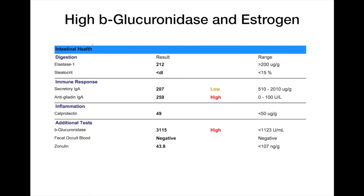High beta-glucuronidase can cause estrogen and other toxins to get reabsorbed back into the digestive tract. Estrogen is not a toxin — it's a hormone — but the beta-glucuronidase pathway is an important way of detoxifying estrogen. So if you've got high estrogen levels and you've looked at phase one of liver detoxification, beta-glucuronidase is looking at phase two of liver detoxification. Here you also see that secretory IgA is low and anti-gliadin is high, so there's a poor immune response occurring.